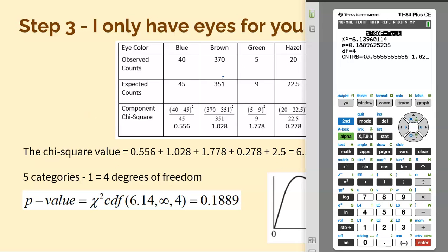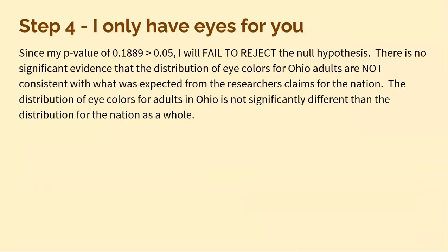Now you're good to go to make your conclusion. They didn't originally give us an alpha level, so I just went with 5%, but it really wouldn't matter if I used 5% or 1%. Since my p-value of 0.1889 is greater than 0.05, I will fail to reject the null hypothesis. There is no significant evidence that the distribution of eye colors for Ohio adults is not consistent with what was expected from the researchers' claims from the nation. My observed data did not match the expected data perfectly, but it wasn't so far off that I can claim Ohio is dramatically different than the rest of the country.